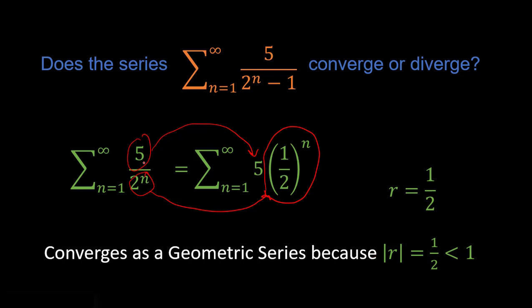Given that r value, we know this geometric series converges because the absolute value of r is one half, which is less than 1. So we know this series in the green converges and we know the series in the orange should behave pretty similarly. However, we don't have a method yet to conclusively make this connection — and that's what the limit comparison test will do for us. In order for it to apply, several criteria have to be met.